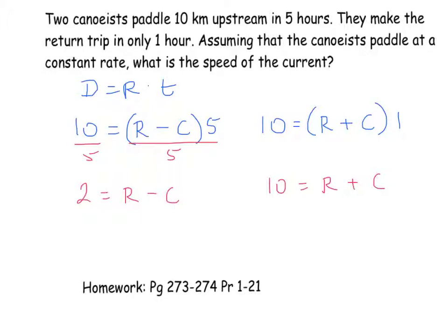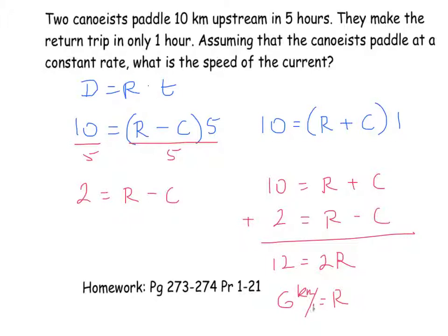Stacking the two equations — 10 equals rate plus current, and 2 equals rate minus current — and adding them gives 12 equals 2 times the rate, so the rate equals 6 km per hour. Substituting back: 2 equals 6 minus the current, so negative 4 equals negative current, meaning the rate of the current is 4 km per hour.